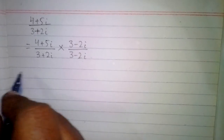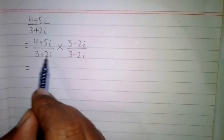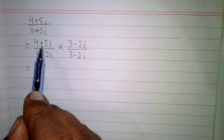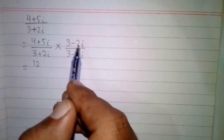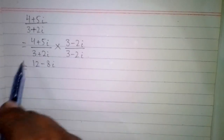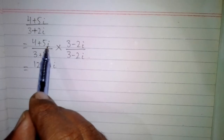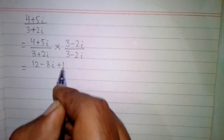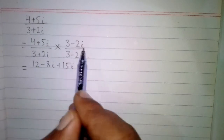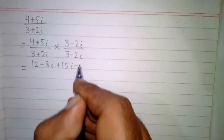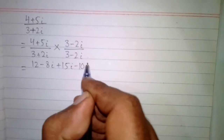Now we will multiply the numerator. We have 4 times 3 is 12, then 4 times minus 2 iota is minus 8 iota, then plus 5 iota times 3 is plus 15 iota, and 5 iota times minus 2 iota is minus 10 iota squared.